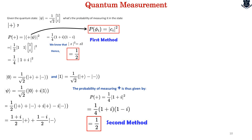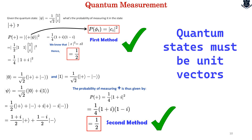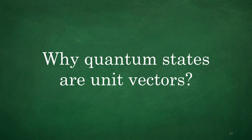From this we conclude that quantum states must be unit vectors. This is the conclusion we draw from both methods giving the same result. But why must quantum states be unit vectors? That is what I am going to explore in the next part of the video.